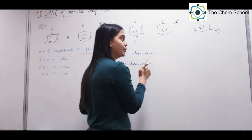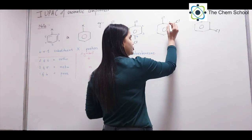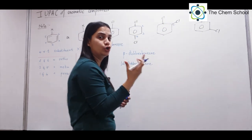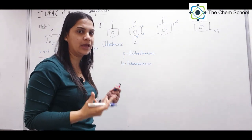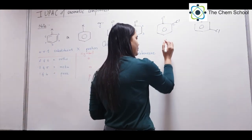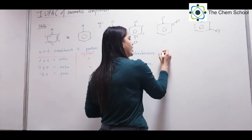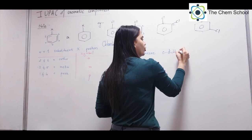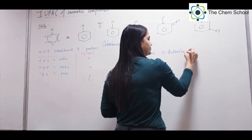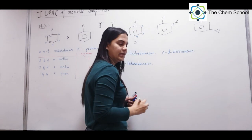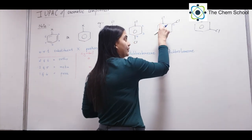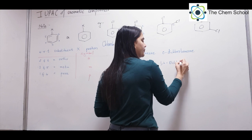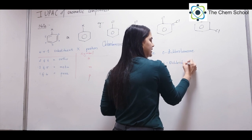Now look at the next example — try it yourself first. Do the numbering: this is 1, and this is 2. So positions 1 and 2 — since 2 is adjacent to 1 — this is the ortho position. So this is ortho-dichloro benzene. In IUPAC numbering you write it as 1,2-dichloro benzene.